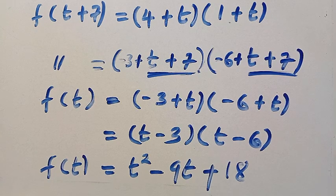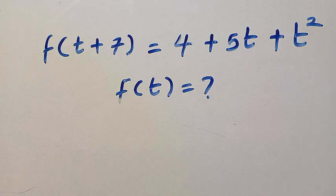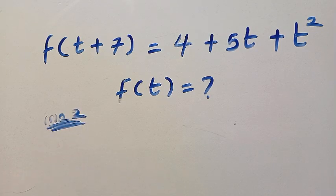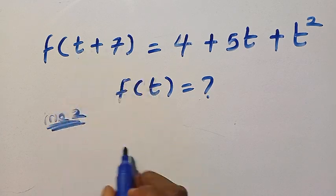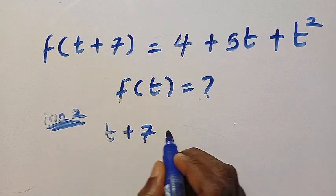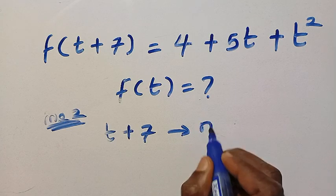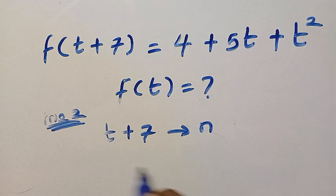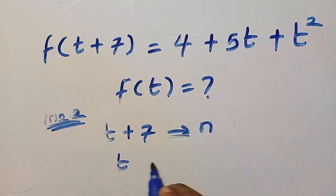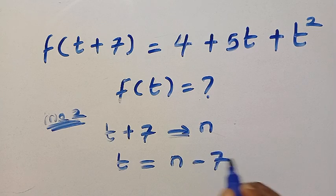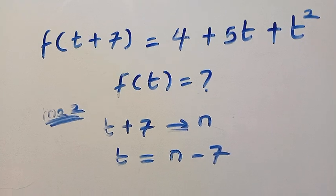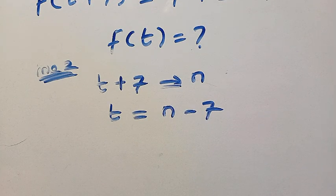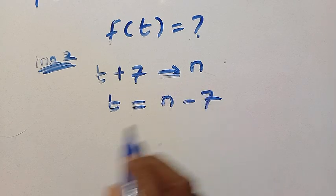Let's solve this with another method. For the second method, method 2, suppose I replace t plus 7. If I let t plus 7 equal n, then I will make t the subject of the formula. Here becomes t equals n minus 7. So we have to substitute this back into the given function.